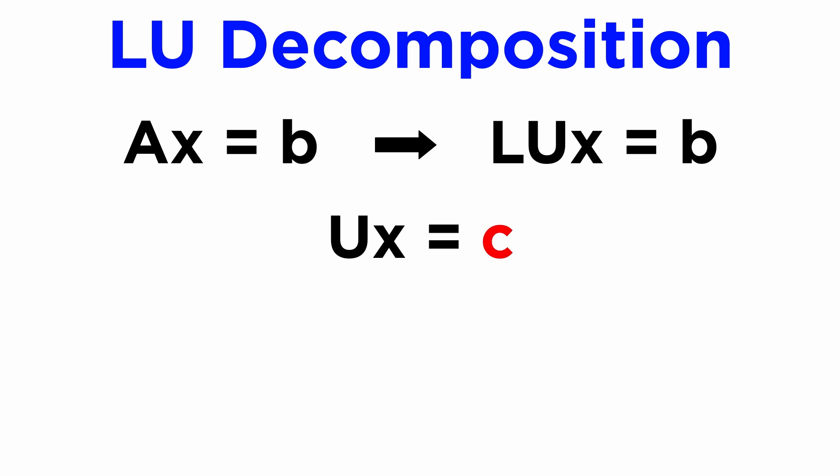Once we've found C, we can apply the exact same procedure to find X from the system UX equals C, since U is also triangular.